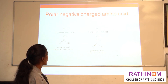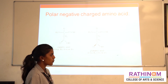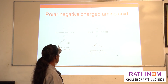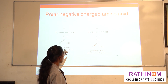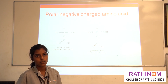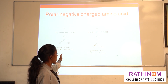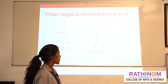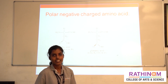The fourth group is polar negative charged amino acids. These are hydrophilic in nature, but the side chain includes an extra acid group beyond the acid group present at the alpha carbon. Examples include aspartic acid and glutamic acid. That concludes today's class. Thank you.